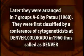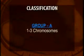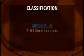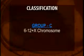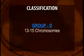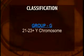Later, in the year 1960, a convention of geneticists was held in Denver and the 46 chromosomes were classified into groups A to G. In group A we have chromosomes 1 to 3, group B has chromosomes 4 to 5, group C has chromosomes 6 to 12 including the sex chromosome X, group D has chromosomes 13 to 15, group E has 16 to 18, group F has 19 to 20, and the last group G has the remaining chromosomes including the Y chromosome.